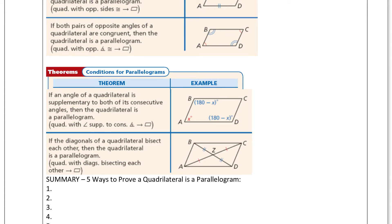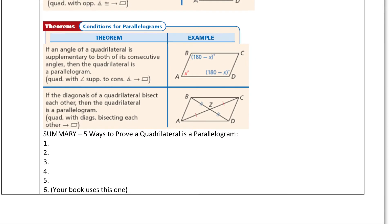Going back to the supplementary one, it needs to be supplementary to both the angles. So if one angle of a quadrilateral is supplementary to both its consecutive angles — X has to be supplementary to this one and to this one — then we know it's a parallelogram. Typically, the five most common ones we'll summarize right here, and then the sixth I'll explain.